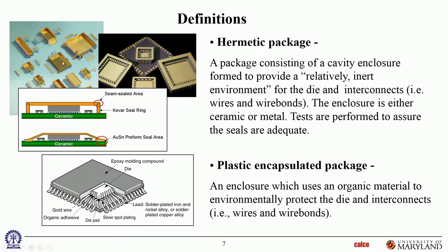Hermetic packages come in two types: metal can or ceramic case. You have a case or substrate and a lid. The dies are bonded down with die attach — sometimes it's a multi-chip module with multiple dies and passive circuitry. Interconnections go through sealed leads with glass frit seals. After placing electronics, you seal the package using glass frit, kovar material, or a gold-tin eutectic hard solder, which has extremely high melt temperatures compared to regular tin-lead solder.